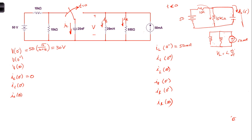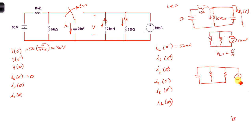Now, we know there's no current going through the resistor, so I sub R at zero minus is going to be zero. That gives us all the zero minus quantities. The switch now moves to the right, giving us the circuit for T greater than zero.